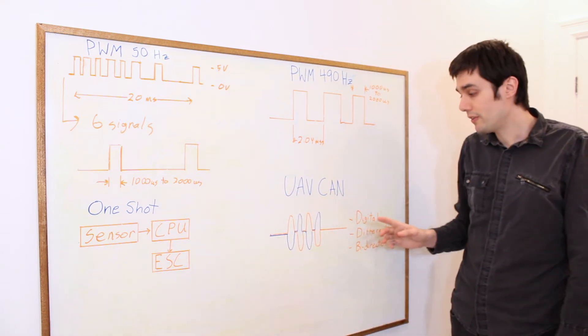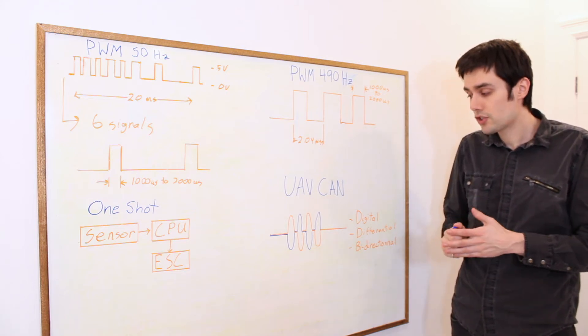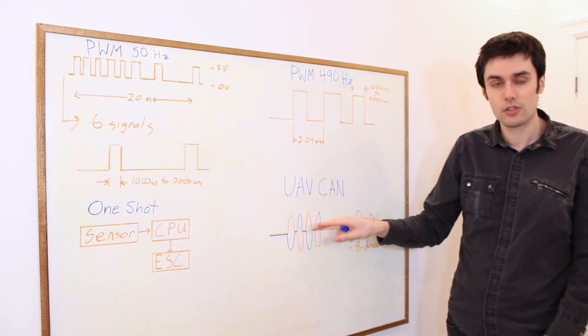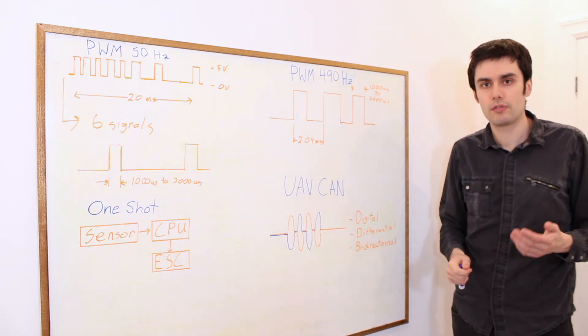Then we got UAV CAN. UAV CAN is a digital signal. It's often used on bigger drones. It's differential, meaning that you have two control signals that resist noise a lot better. And finally, it's bi-directional, meaning you can get data back from your ESC.